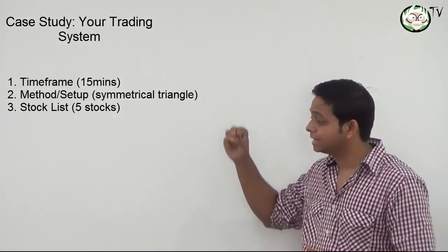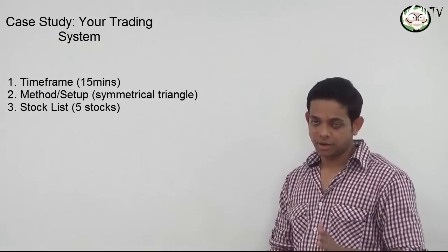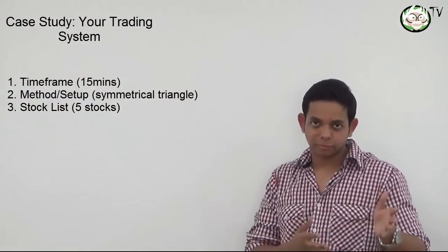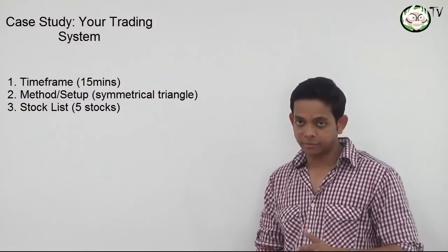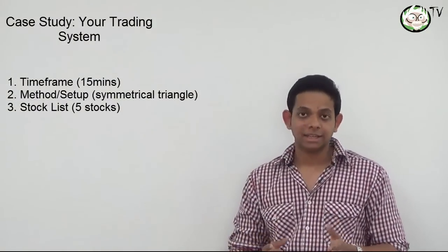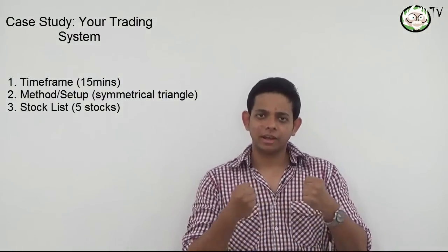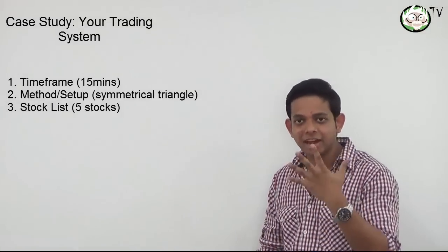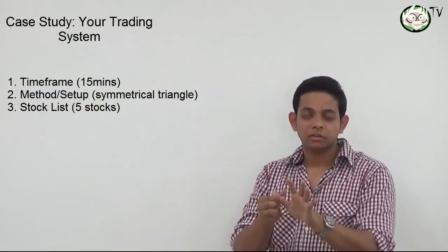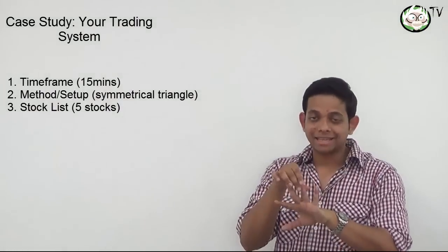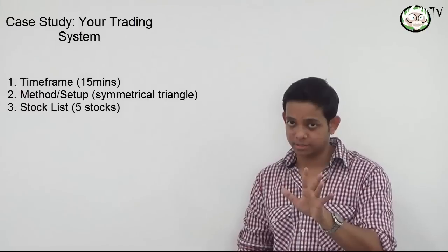Now let's say you decide to make a system out of this. You need three things. First, a time frame — let's suppose you decide to trade the 15-minute charts. Second, a method — let's suppose our method is trading symmetrical triangle breakouts and breakdowns according to the trend. Third, a stock list. It's impossible to trade all 50 stocks of the Nifty index, so as a hypothetical example, let's take five stocks that we'll scan every day: Reliance, Reliance Capital, GMR, L&T (Larsen and Toubro), and Nifty Futures.